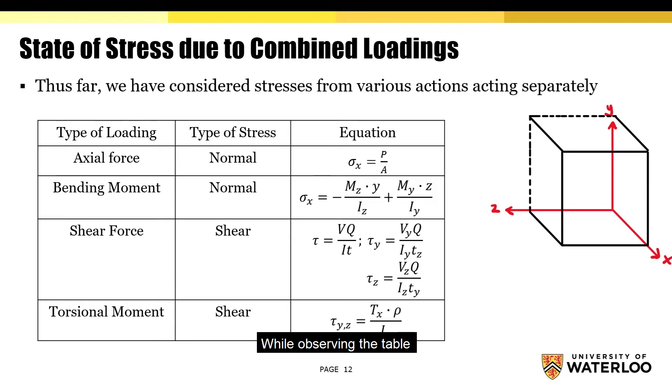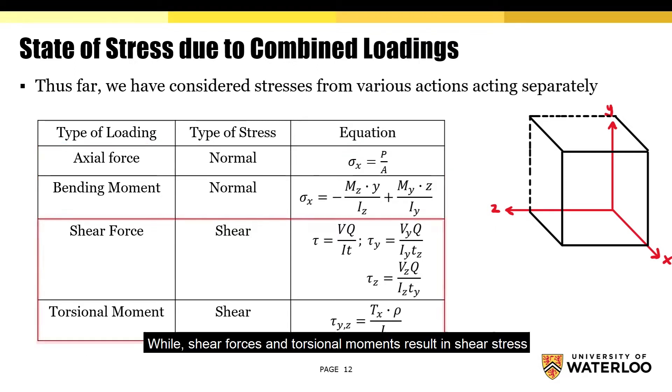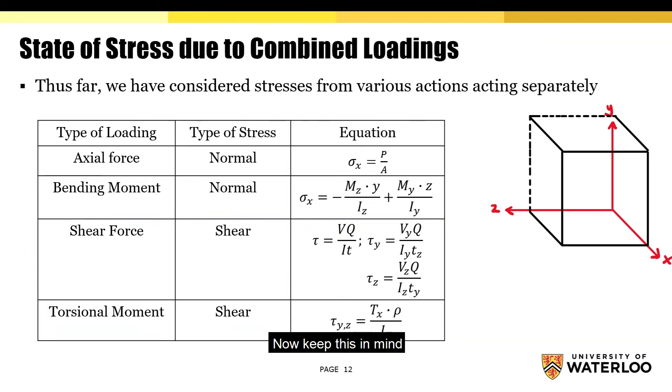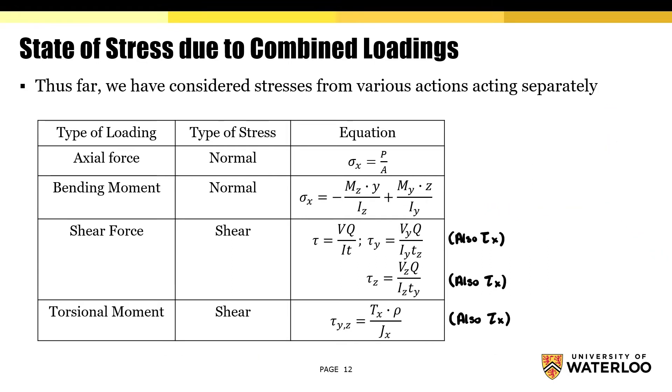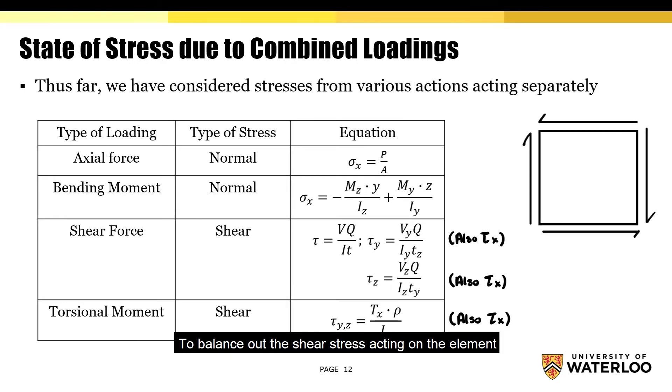While observing the table, you may notice that the axial forces and bending moments result in normal stresses, while shear forces and torsional moments result in shear stress. Now keep this in mind: the shear stress for the y and z component is also tau x. Tau x is simply acting on the cross section in the x direction to balance out the shear stress acting on the element.